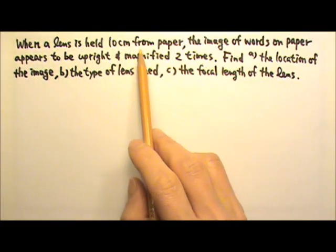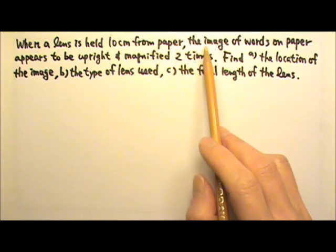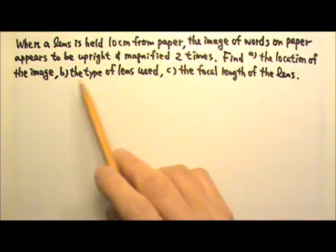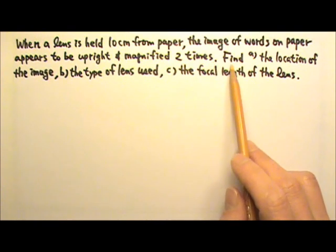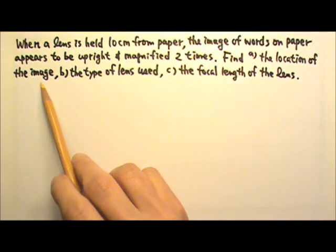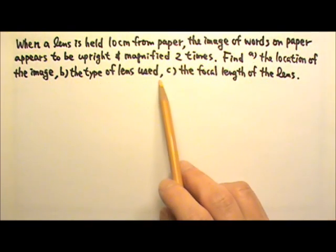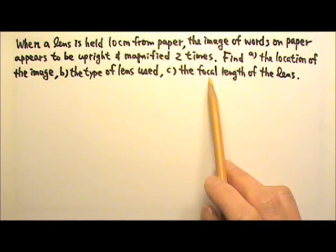When a lens is held 10 cm from a piece of paper, the image of words on paper appears to be upright and magnified two times. Find A the location of the image, B the type of lens used, and C the focal length of the lens.